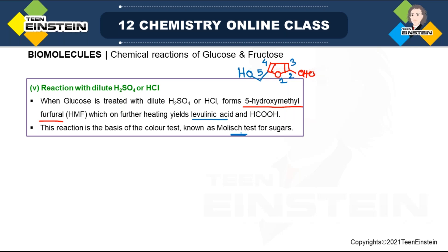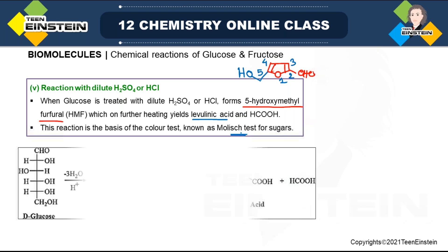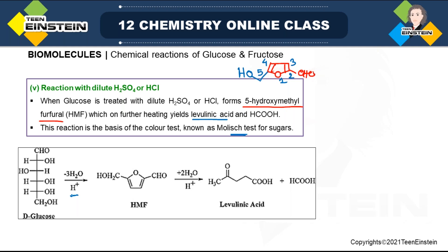D-glucose in the presence of dilute acid (H₂SO₄ or HCl) is converted to HMF with removal of three water molecules. If further heated with additional water, the structure breaks to give two products: formic acid and levulinic acid (structure: CH₃CO–CH₂CH₂–CO₂H). This reaction is the basis of the color test known as the Molisch test.